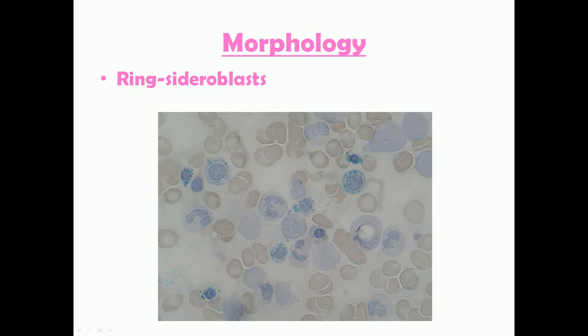This picture shows ring sideroblasts, which are present in myelodysplastic syndrome. The stain performed here is Prussian blue stain, which shows iron-laden mitochondria present inside the cells.